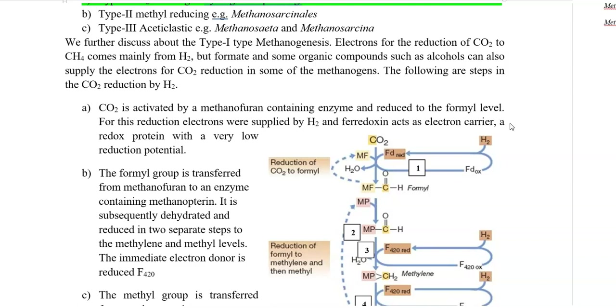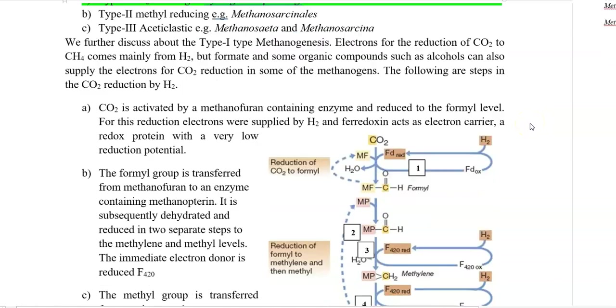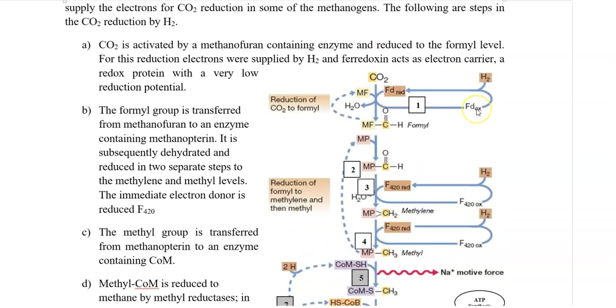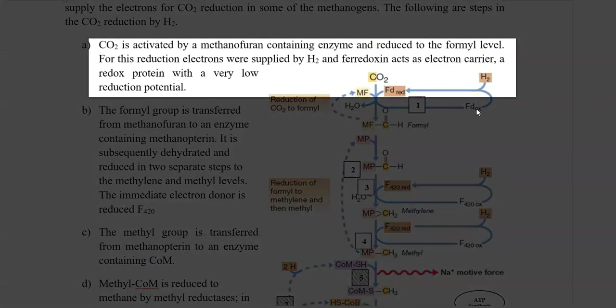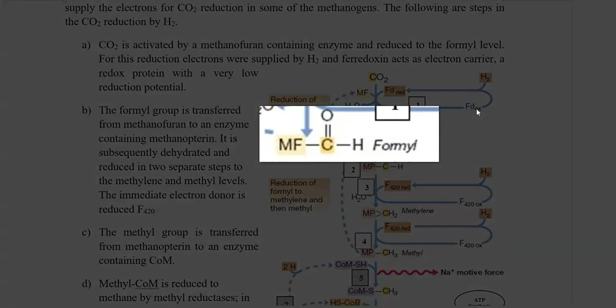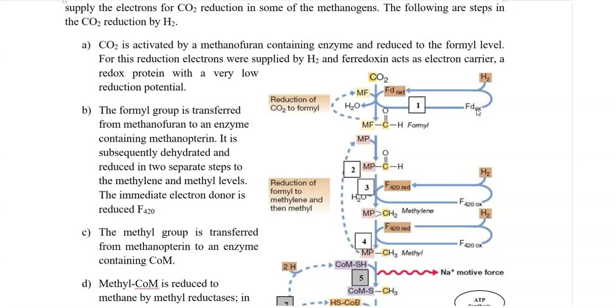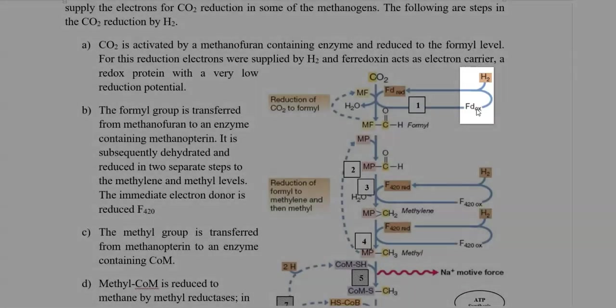Now, we look at the various steps involved in the hydrogenotrophic way of methanogenesis. In the first step, carbon dioxide is activated by the methanofuran-containing coenzyme, which is involved in reducing it to the formyl level. Here, the electrons for this reduction are supplied from hydrogen and ferredoxin is the one which acts as the electron carrier in this process.